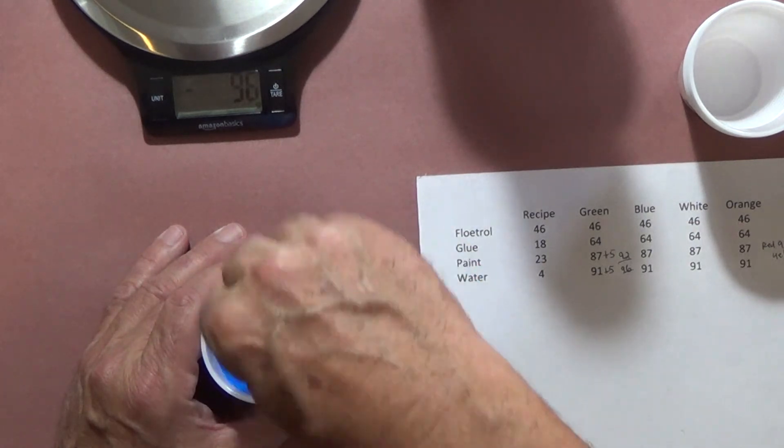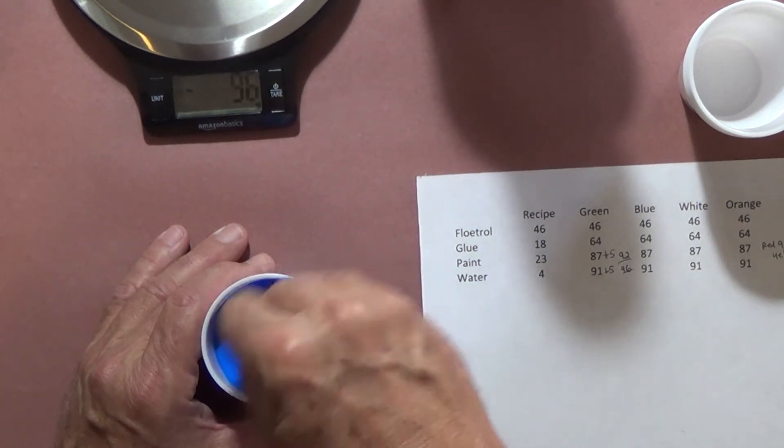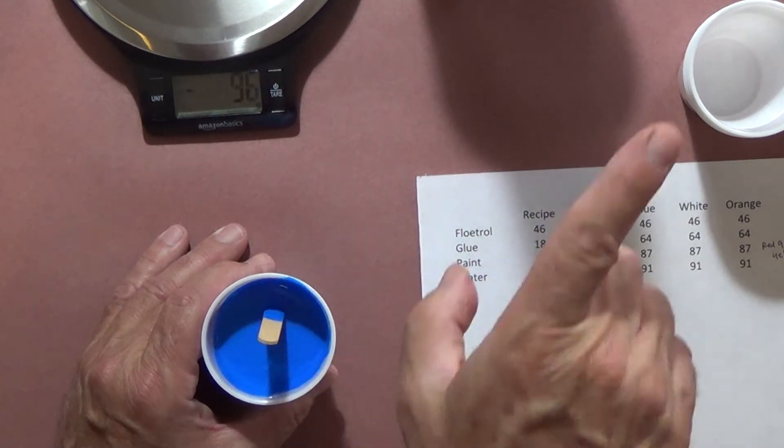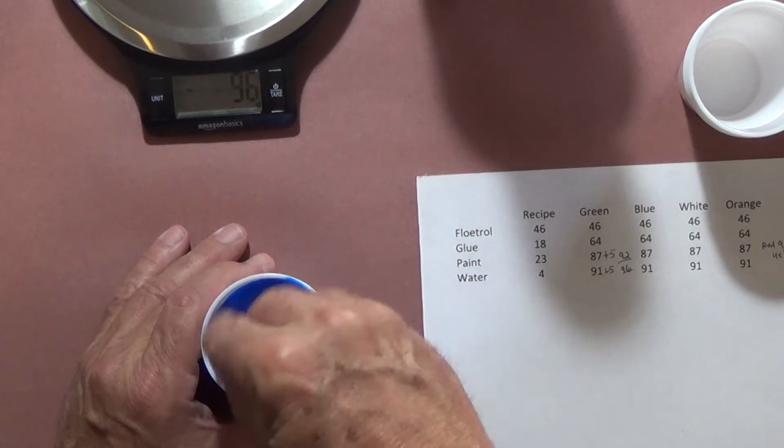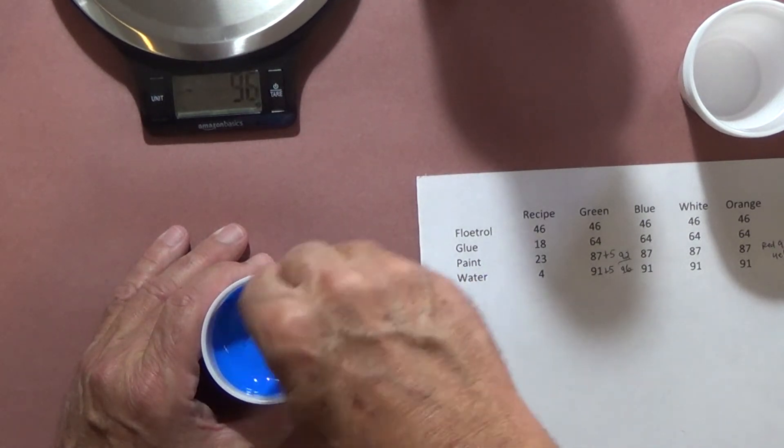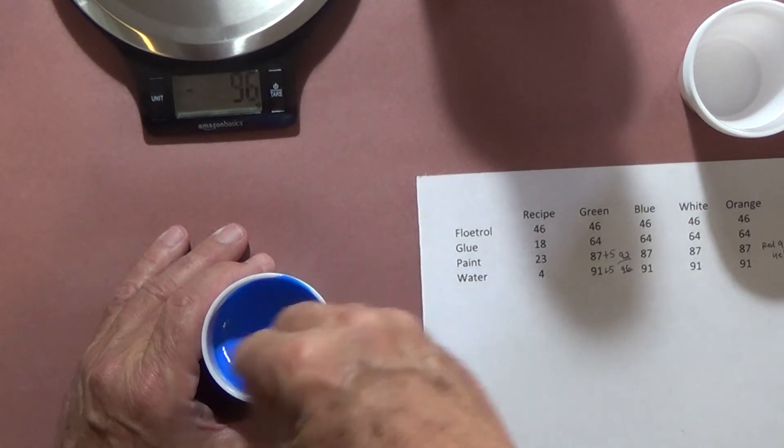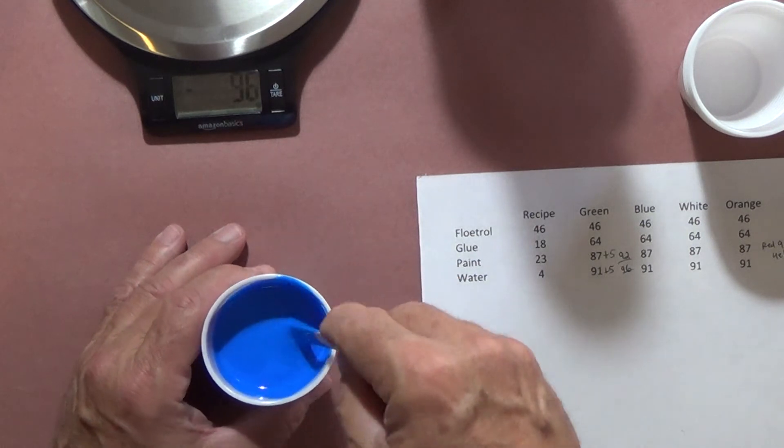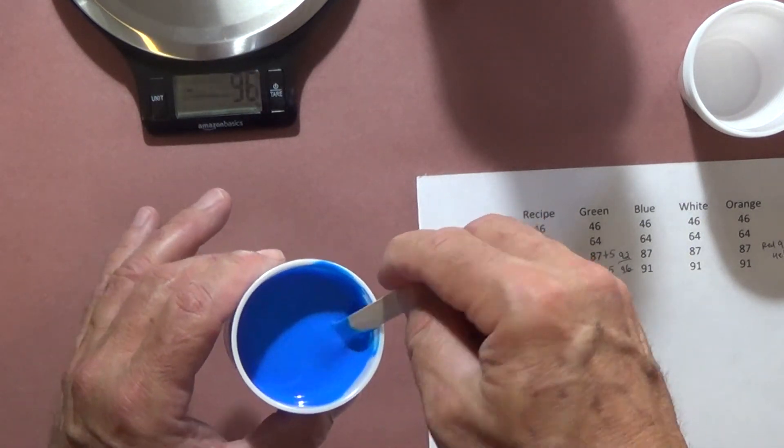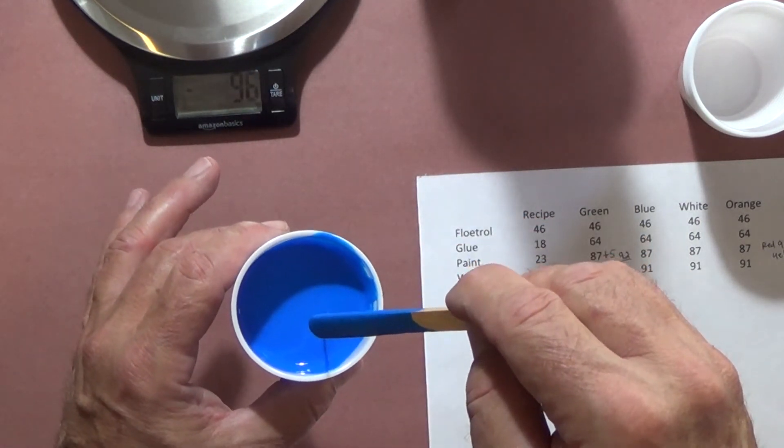But I'm really happy with this recipe. It dries, the colors dry very true, and they dry with a pretty good sheen on them. As soon as I get done mixing all this I'm going to do another video. I'm going to do a colander pour, so I'll put a link in this video up here in the top to the colander pour so you can see how the painting actually comes out with this recipe.